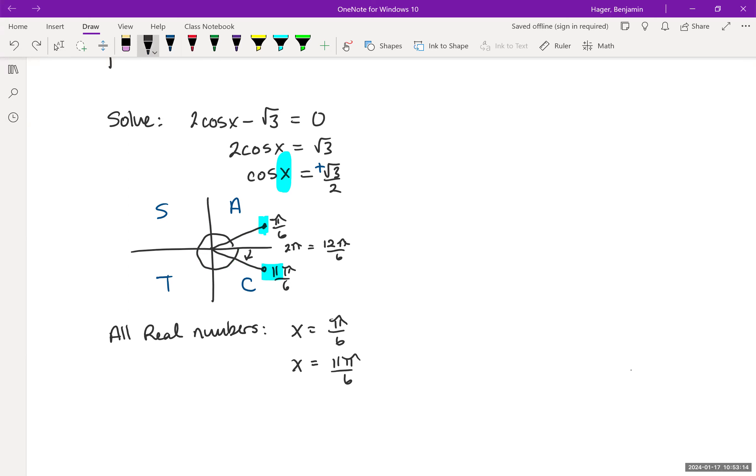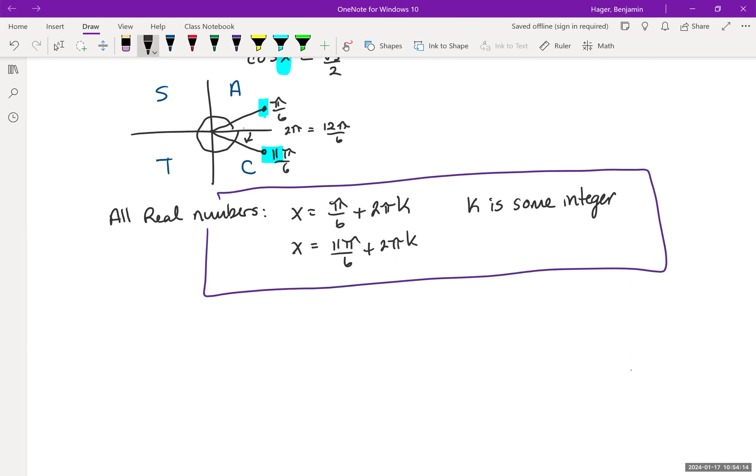If they want us to find all real numbers, or the general solution, then I want to list out these two angles: π/6 and 11π/6. But I also need to account for all those infinitely many co-terminal angles. Recall how we generate a co-terminal angle - we just add a lap around the circle. So x = π/6 + 2πk or x = 11π/6 + 2πk, where k is an integer. This would be the general solution representing infinitely many solutions.